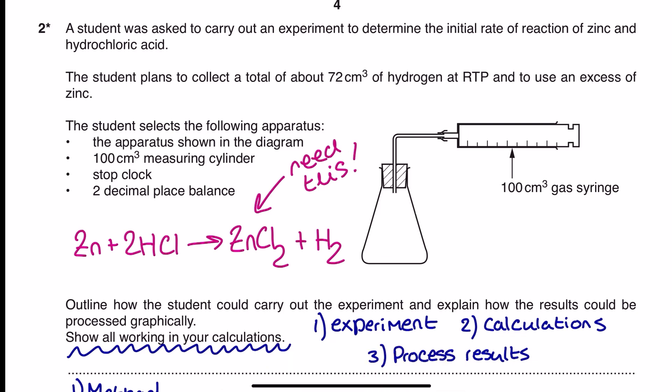So here we're looking at how we would assemble a continuous monitoring practical, and how we would analyse the results from this to determine the rate of reaction. We've even been asked to demonstrate how we would process the results graphically. Now for this particular question I did find it quite vague, because how you need to include your calculation in your answer isn't obvious when you first read through the instructions of the question.